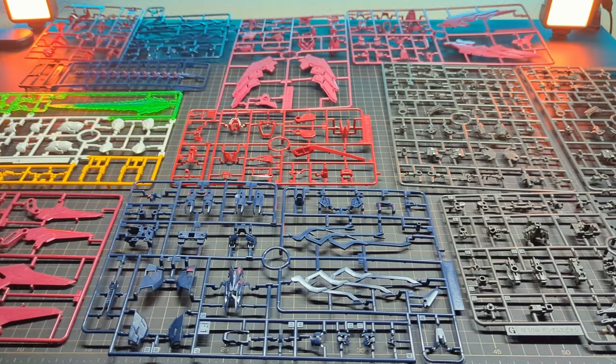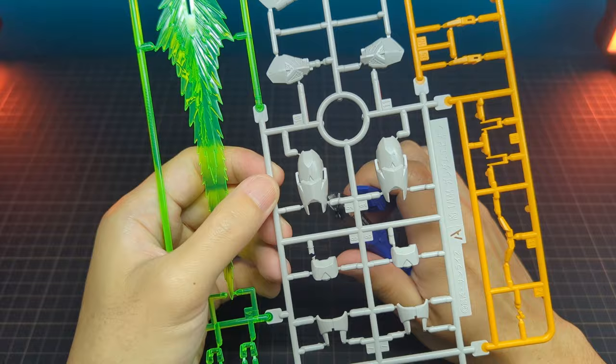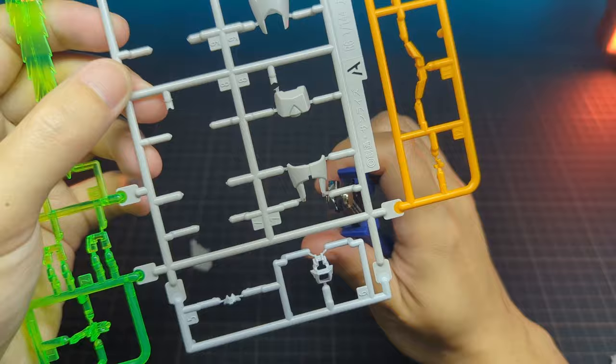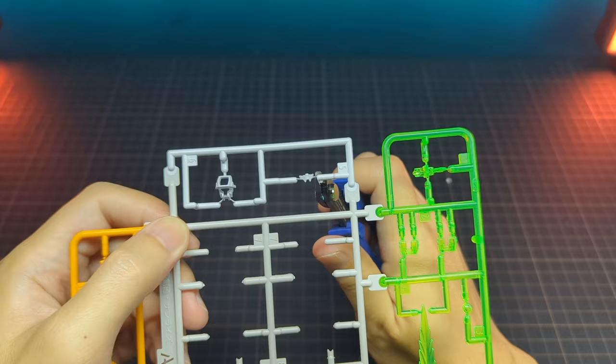This latest Real Grade from Bandai has a total of 12 runners inside the box - a good amount. The advanced MS joint of this kit, which is a signature of the line, is the pre-molded heat rod.